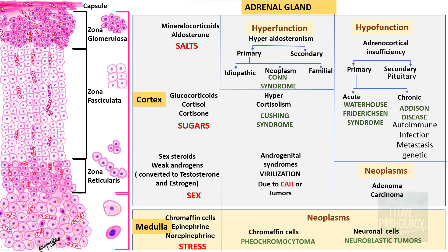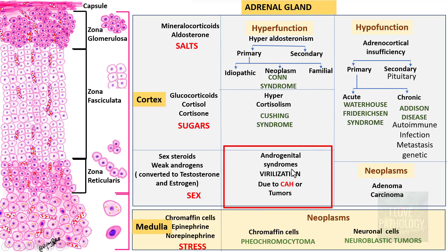This is what we have been learning in the last 3 sessions. We talked about hyperfunction of glucocorticoids and hyperfunction of mineralocorticoids, and in this session we will look into hyperfunction of sex steroids — that is, hyperfunction of zona reticularis — and we will be discussing about androgenital syndromes.